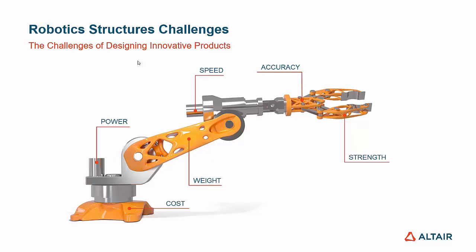Key considerations include power, speed — especially in high-speed applications — accuracy in pick-and-place situations, and strength when workloads are large. When it comes down to it, the overall weight makes a huge difference in the actual robotics design.